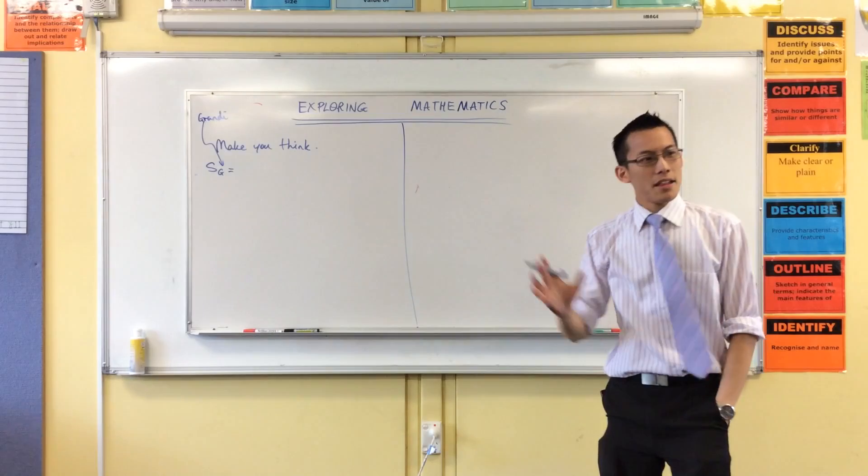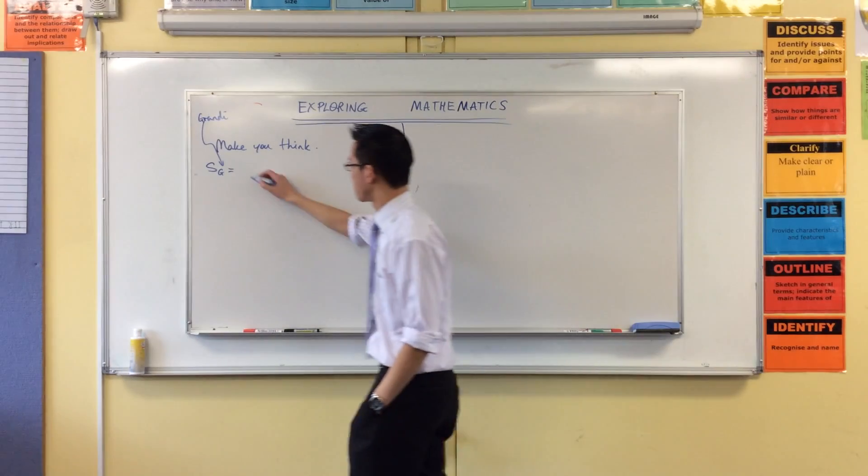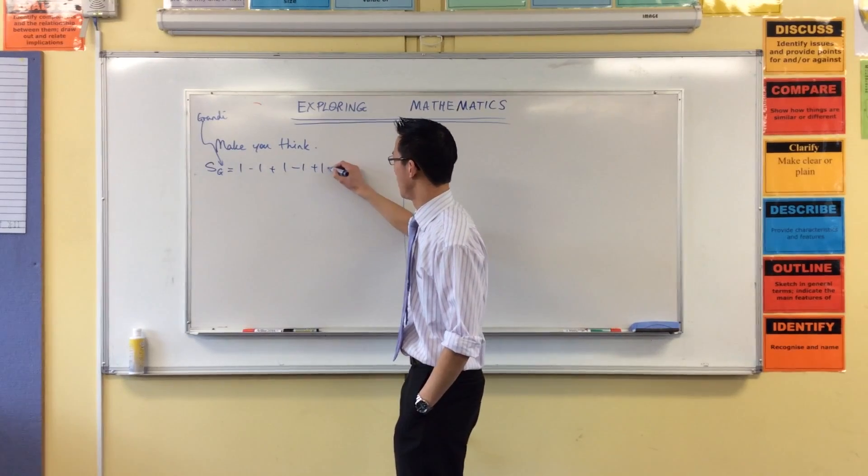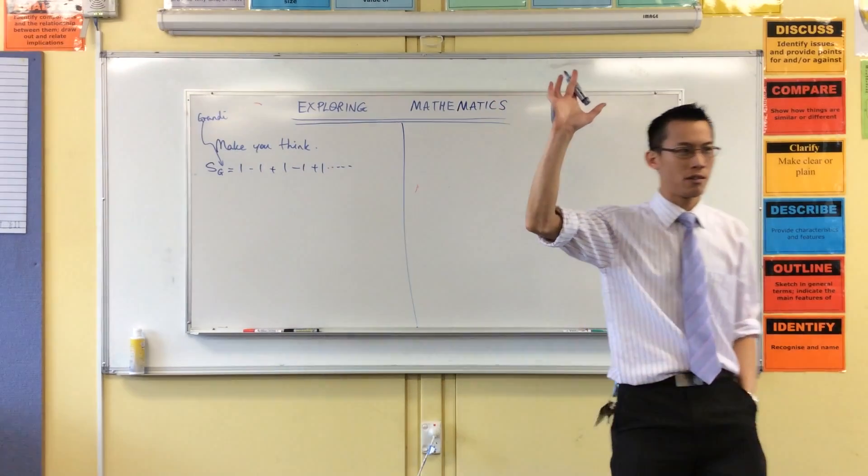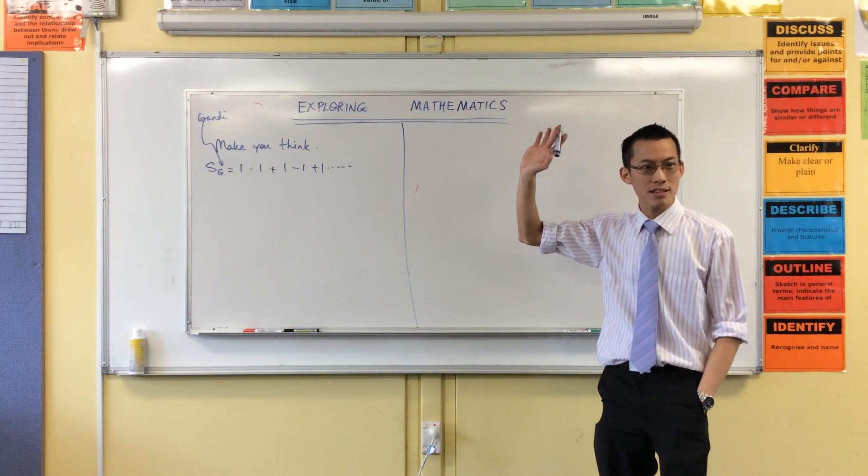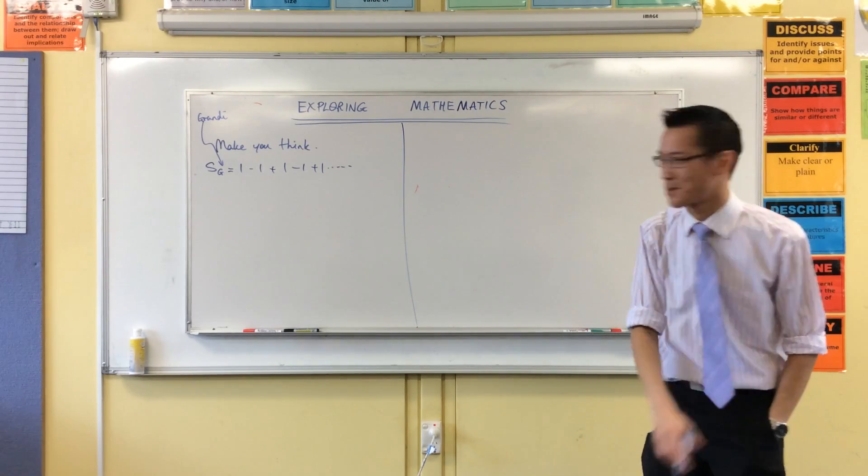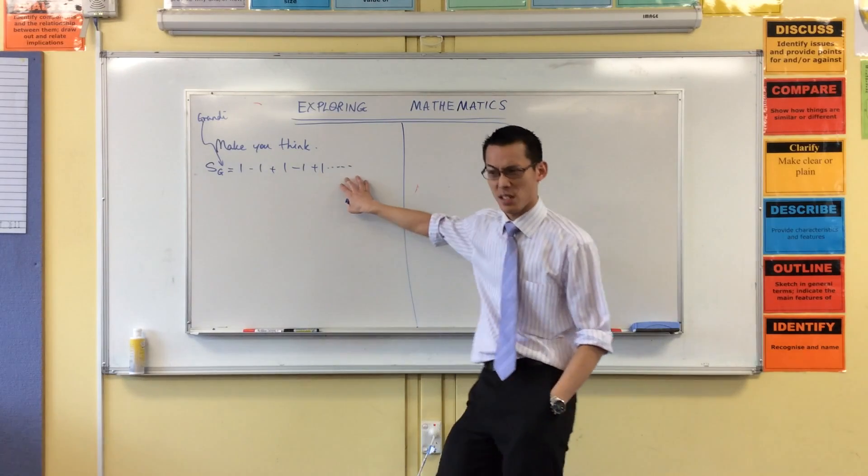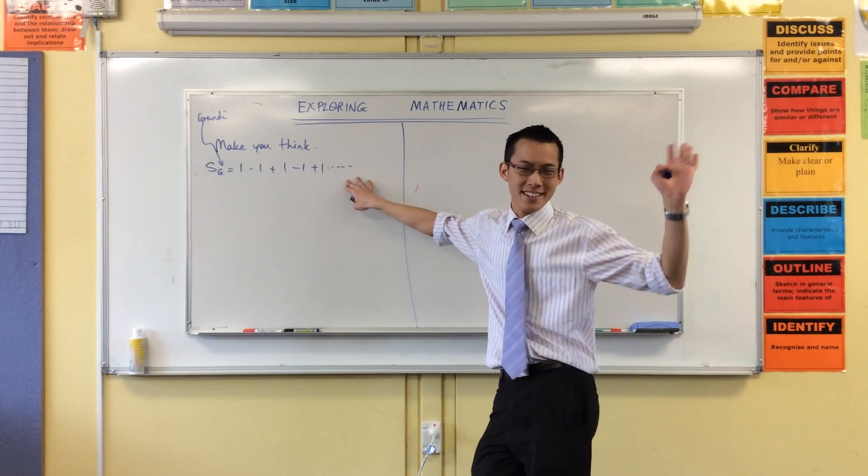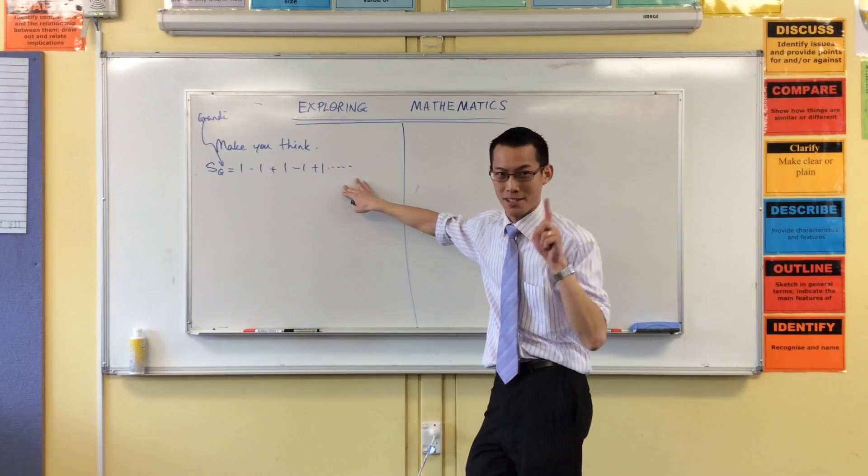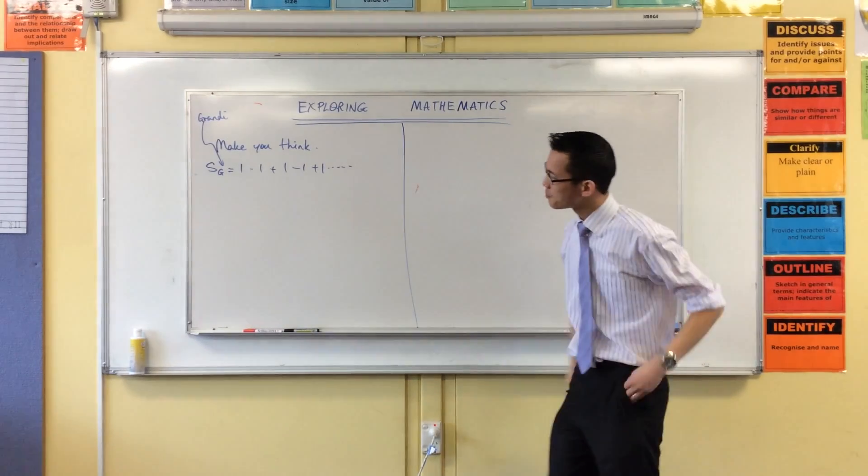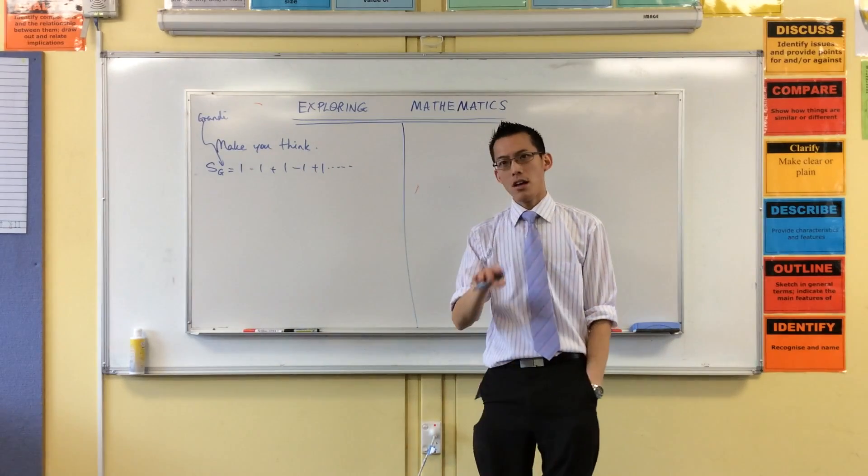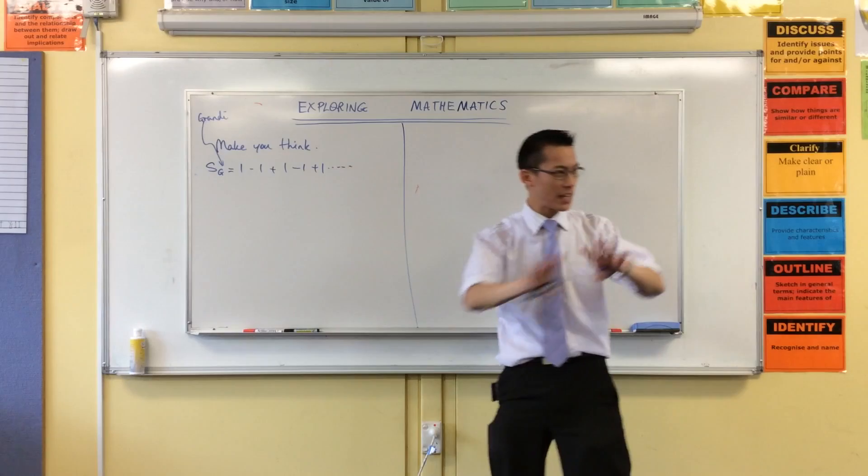The series that he thought about looked like this: very simple, one minus one plus one minus one plus one forever. Raise your hand if you've seen this before. Anyone? Yeah, you have? Don't spoil it for everyone else. Now this dot dot dot - what do you think that means? Just keeps going. I'm glad some of you said infinity. Infinity is going to be something we deal with later on, but I'm just going to leave that for now. It does mean it keeps on going forever, never ends.